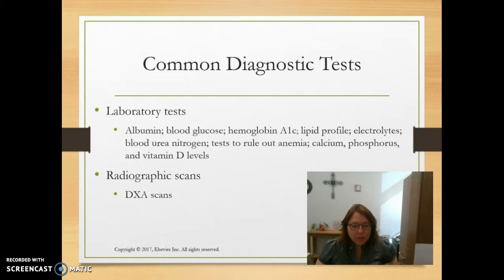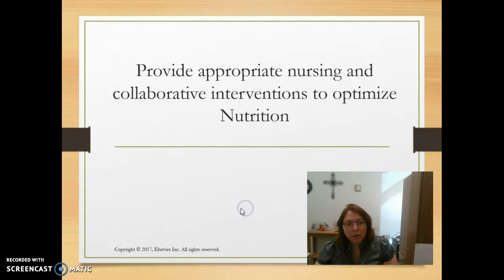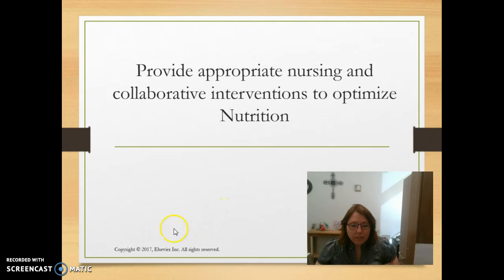Other tests include CBC to rule out anemia, calcium and phosphorus levels, and vitamin D levels. In newborns, a PKU (phenylketonuria) heel poke test assesses for enzymatic deficiencies that can lead to intellectual disability. Cystic fibrosis testing involves a sweat/salt test. DEXA scans assess bone density, as discussed with osteoporosis. In part two of this video, we'll cover appropriate nursing and collaborative interventions to optimize nutrition.